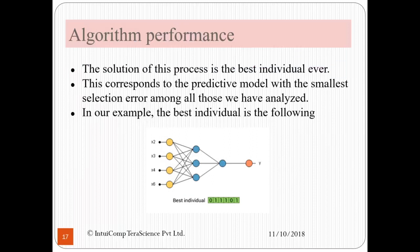Now let us discuss the algorithm performance. The solution of this process is the best individual ever. This corresponds to the predictive model with the smallest selection error among all those we have analyzed. In our example, the best individual is the following. And therefore, the individual 011101 will have the highest fitness, and this fitness will converge up to certain generations and we will stop the GA therefore.